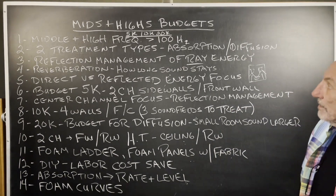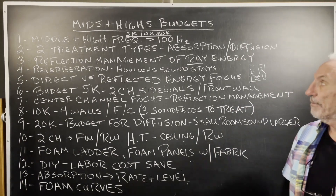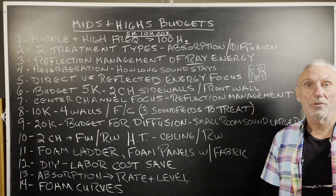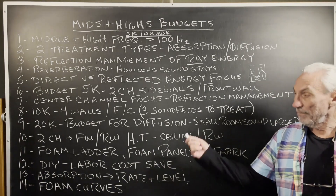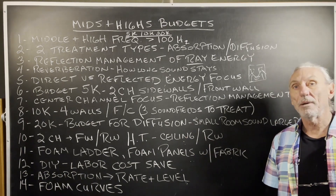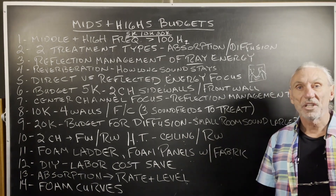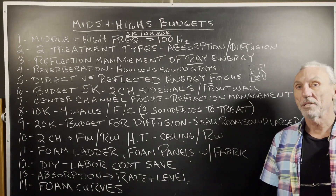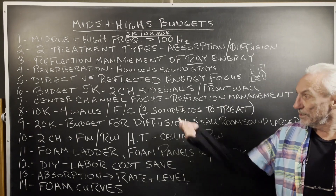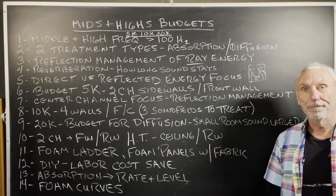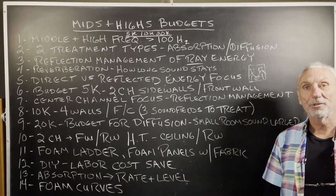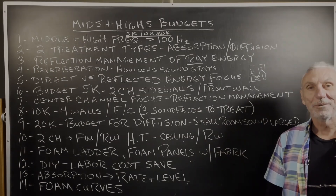So — mids, highs, budget: 5k, 10k, 20k. A combination of maybe doing DIY and staging it, and treating some surface areas depending on usage first. Hope this helps. Thank you.